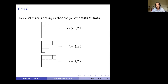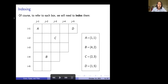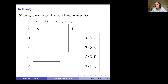If we want to refer to each box, we'll need to index them — give them a name. If you're familiar with matrices and matrix indexing, it's the same thing. For example, box A corresponds to coordinate (1,1), box B to (4,2), box C to (2,3), and so on. We're just giving all these boxes a name, which will help us explain the theorem later.